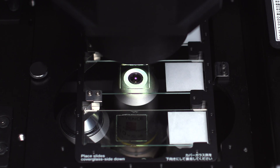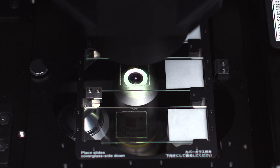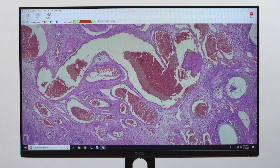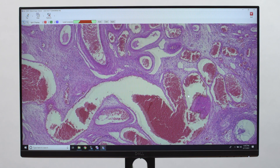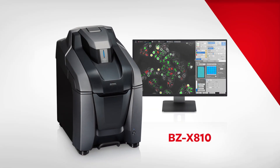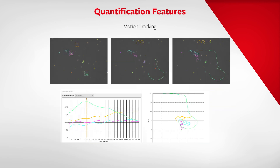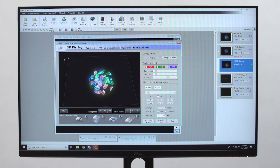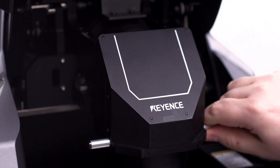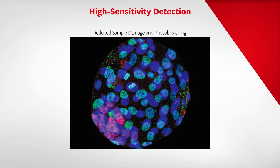Anyone from a novice to an expert can capture publication-quality images in seconds. The BZ-X incorporates in-depth quantification features such as cell counting, motion tracking, and 3D volumetric analysis. The high-resolution camera captures images with a strong signal-to-noise ratio for more accurate analysis.